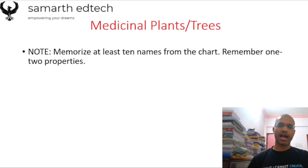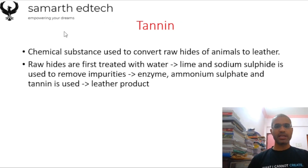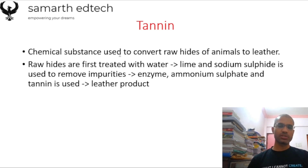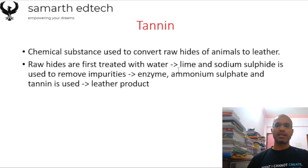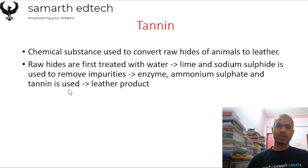The next topic is tannin, which is a kind of non-timber forest produce. It is a chemical substance used to convert rawhides into leather. The rawhides are first treated with water, then lime and sodium sulfite are used to remove impurities, then enzyme and ammonium sulfate as well as tannin derived from tree species are utilized to produce leather.